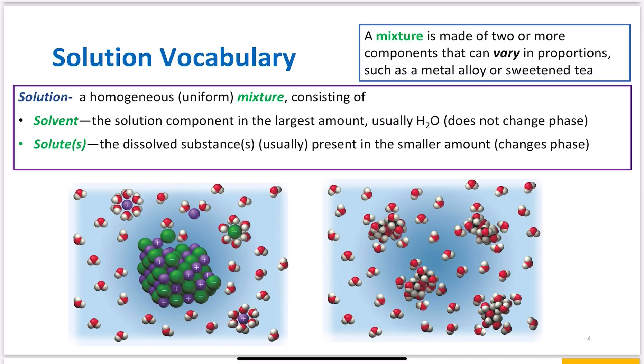Not very helpful if you don't know the terminology yet. First of all, a mixture is defined as something made of two or more components that can vary in proportions. Like a metal alloy can have differing ratios of metals in it, or sweetened tea - people can put different ratios of tea to sugar to water in their tea.